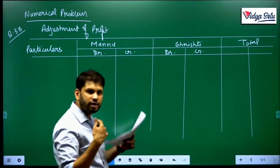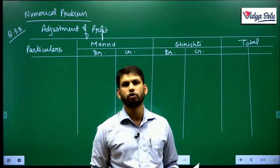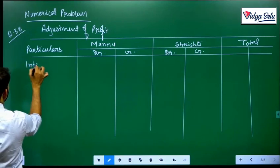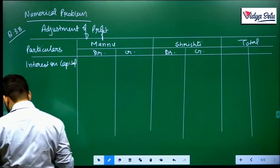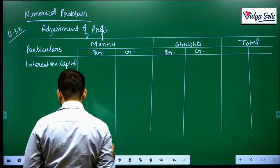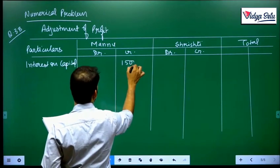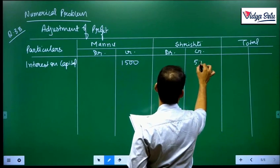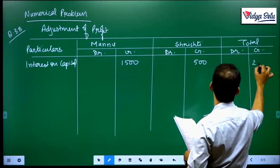Interest on capital whenever we will give to the partners will increase their capitals, and interest on drawings will decrease their capital. So interest on capital at the rate of 5% on 30,000 is 1,500 and on 10,000 is 500. So we have to give 1,500 and 500, total 2,000 we have to give.